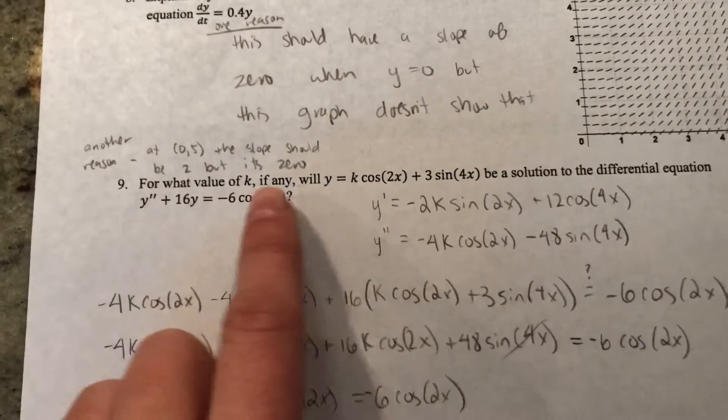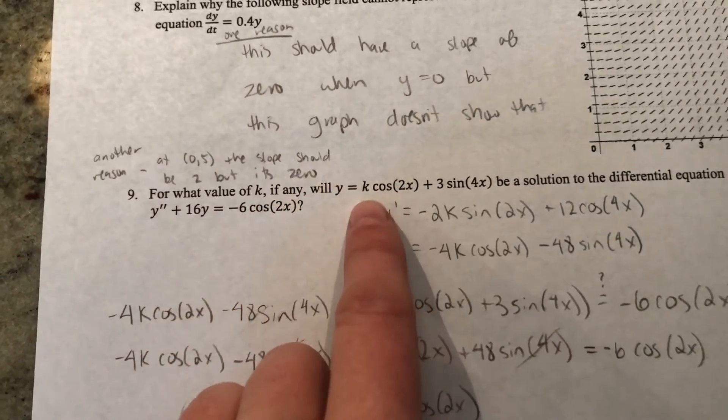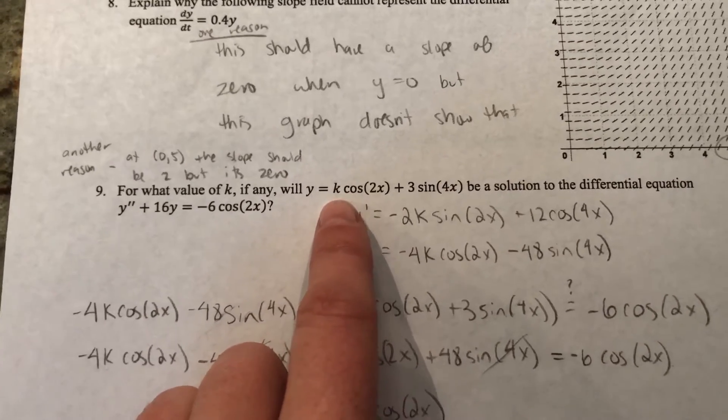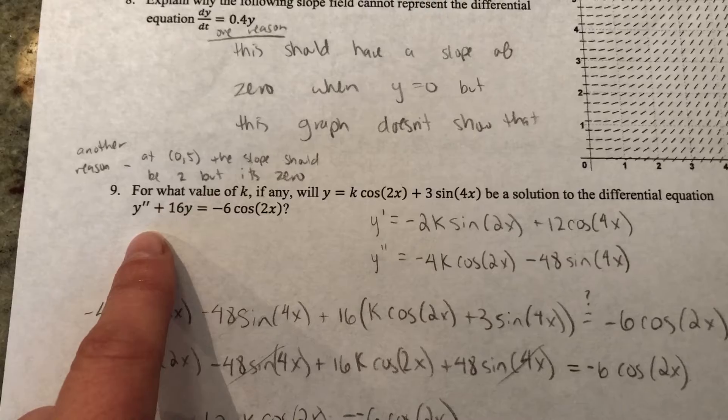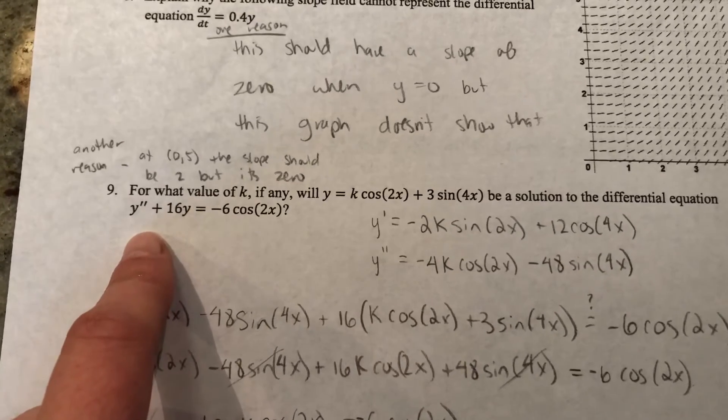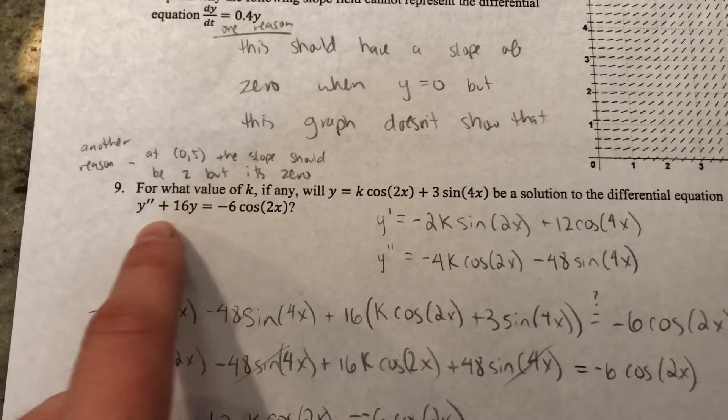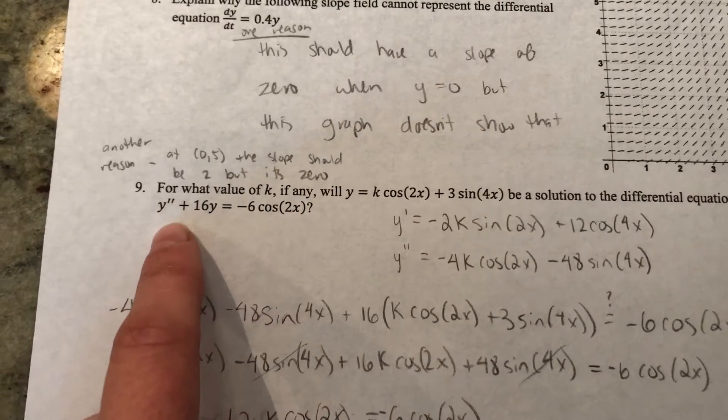For number nine, it's asking you to find the value of k that makes this equation a solution to this differential equation. In order for something to be a solution to a differential equation, it needs to be true when you plug it in. So I have to first find the second derivative.